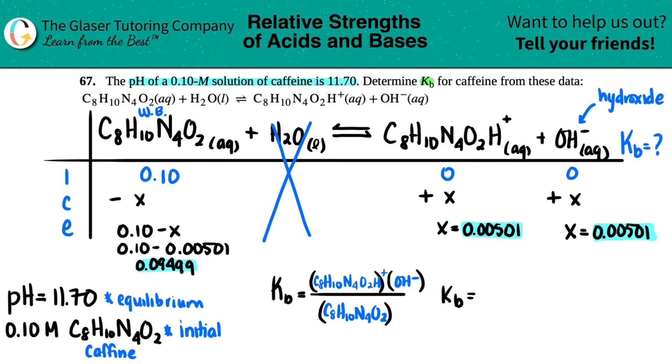Let's plug in the actual values. KB equals 0.00501 times 0.00501, so basically squared, divided by 0.09499. And that will get us our KB value. Let's see. 0.00501 times 0.00501 divided by 0.09499. And now I guess two sig figs. So 2.6 times 10 to the negative fourth. And that's our answer. Not bad.